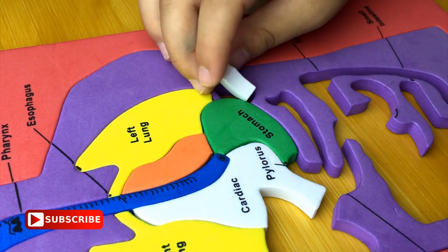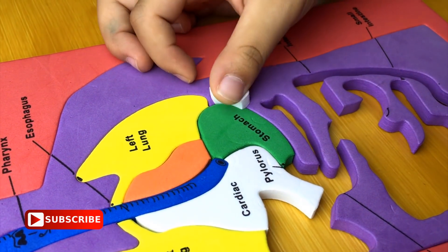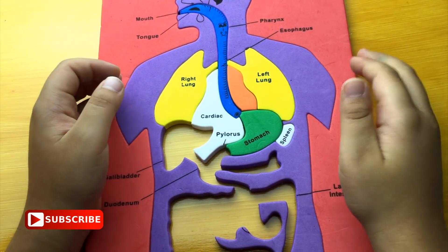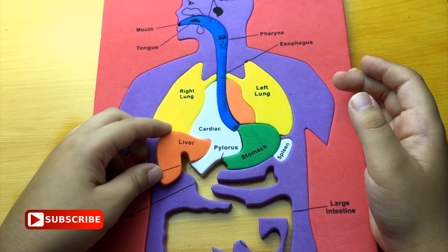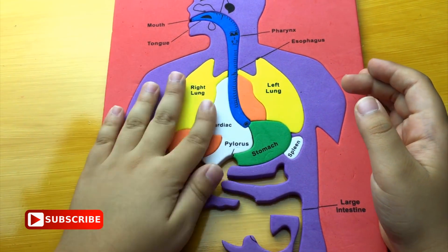And this is spleen. It's small. Liver next to cardiac and pylorus.